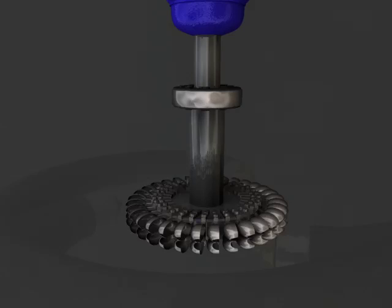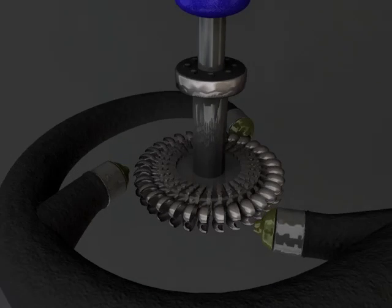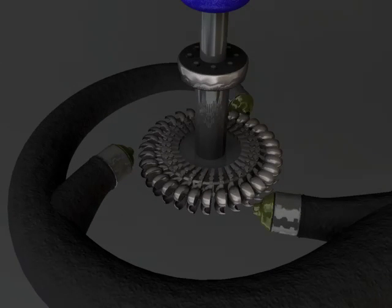Pelton turbines can be installed horizontally as well as vertically. When mounted vertically, several nozzles can be employed, resulting in high turbine speeds.